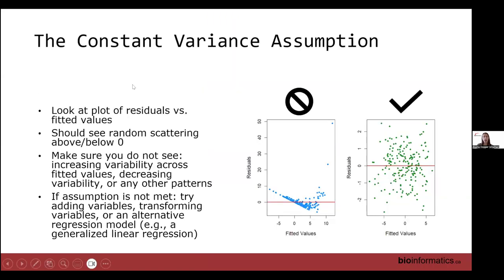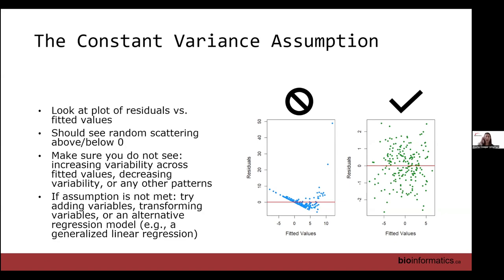For the constant variance assumption, we check this after the model is fit by plotting model residuals on the y-axis against fitted or predicted values on the x-axis. Ideally we want to see residuals randomly scattered around zero with no clear pattern, as in the plot on the right. The plot on the left shows a clear pattern — residuals decreasing with fitted values — indicating non-constant variance. If this is not met, we can try adding or transforming variables, or consider whether a generalized linear model might make more sense.